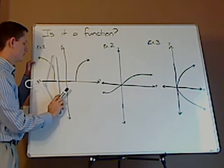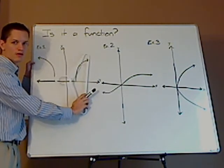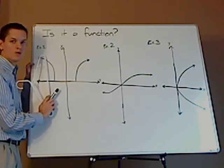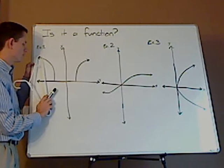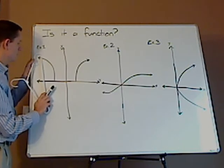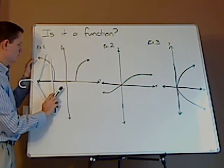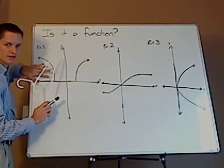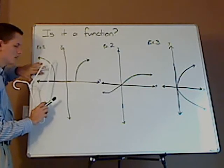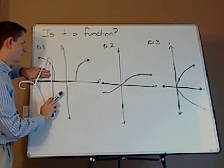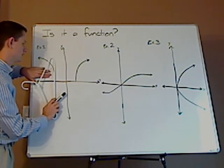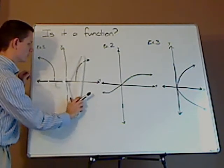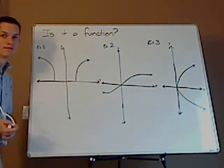So if I pass the vertical line through, it doesn't intersect it in more than one spot. Notice it's one point all the way through. Then it gets pretty close, but this is an actual curve. So it gets pretty close, but it doesn't actually intersect at two points. So this would be a function. So the answer is yes.